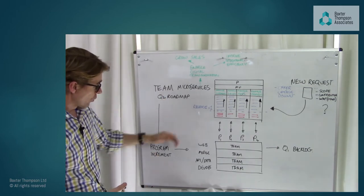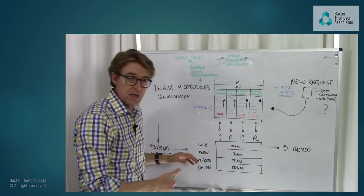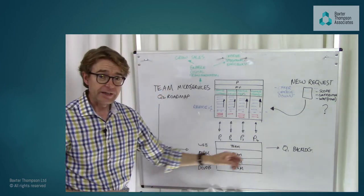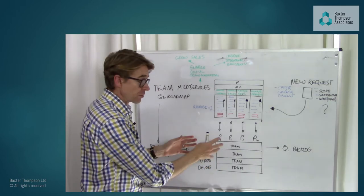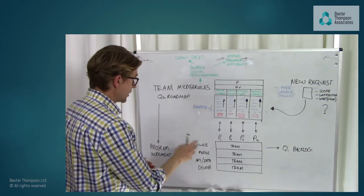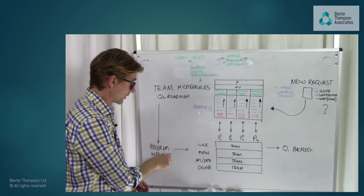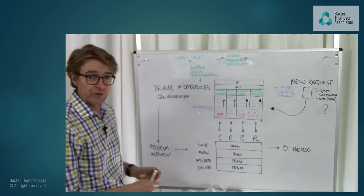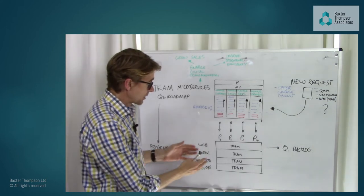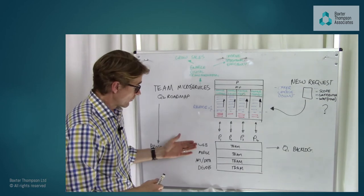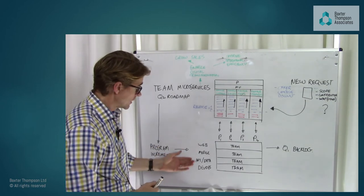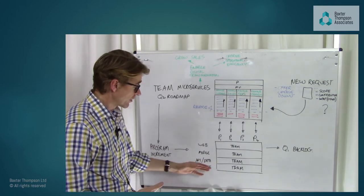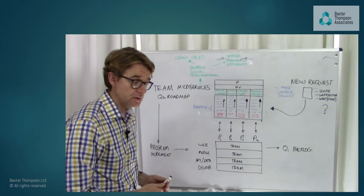For the near-term backlog, the first quarter has been decided by the teams — determining what can be realistically achieved in the next three months. With a microservices platform, inevitably there will be a web front end, a mobile app, APIs to access the data, data management, and DevOps providing the underpinning infrastructure behind the scenes.